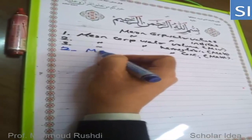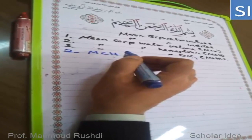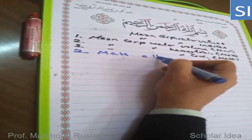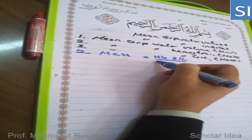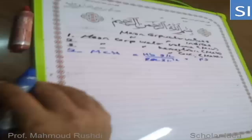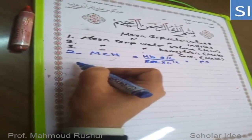Number two: MCH, or mean corpuscular hemoglobin, is defined as the amount or weight of hemoglobin in a single red blood cell. It is obtained by dividing the hemoglobin concentration in grams per liter by the red blood cell count in gigaliters. The result is expressed in picograms.